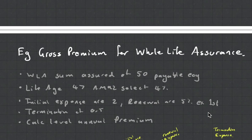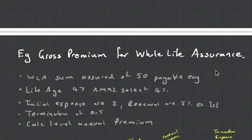For example, the gross premium for a whole life assurance. Let's say we've got a whole life sum assured of 50, payable at the end of the year to a life who's aged 47. The initial expenses are 2, renewal expenses are 5% excluding the first, and termination is 0.5. Calculate the level annual premium. Now, the big trick with this gross premium is the renewal expense. Initial expense is very easy to deal with. Termination expense is easy to deal with.